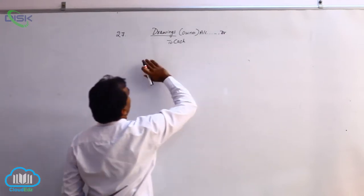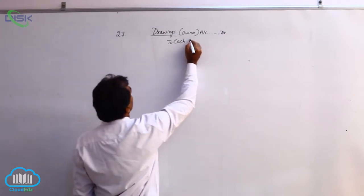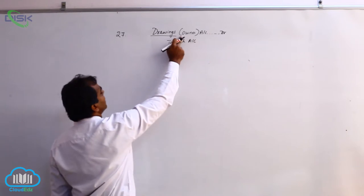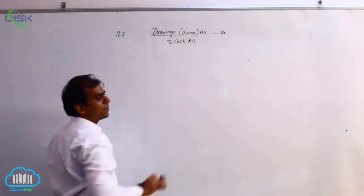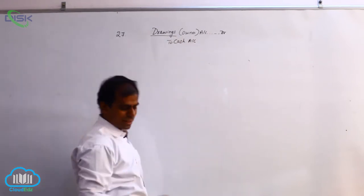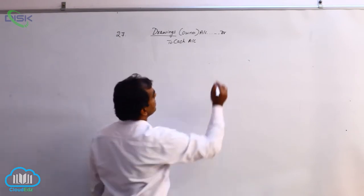Drawings account debit to cash account. I have mentioned the word 'owner' in brackets only for understanding—you need not write it. The amount is 7,000.